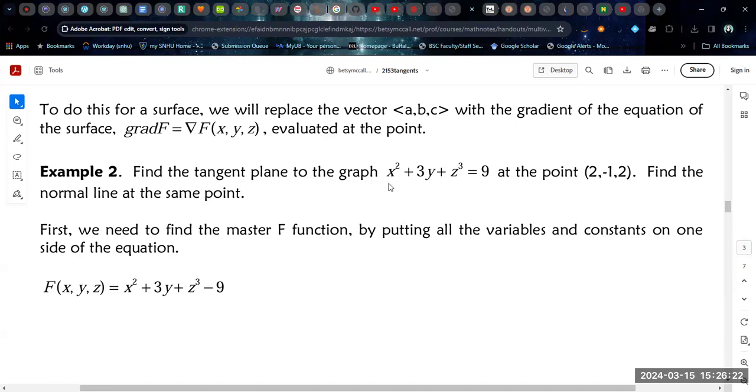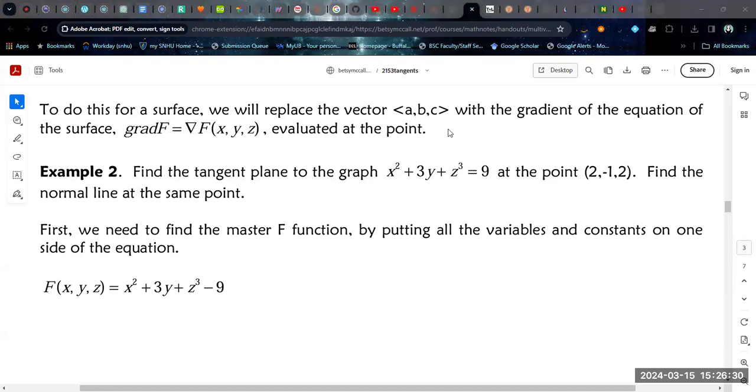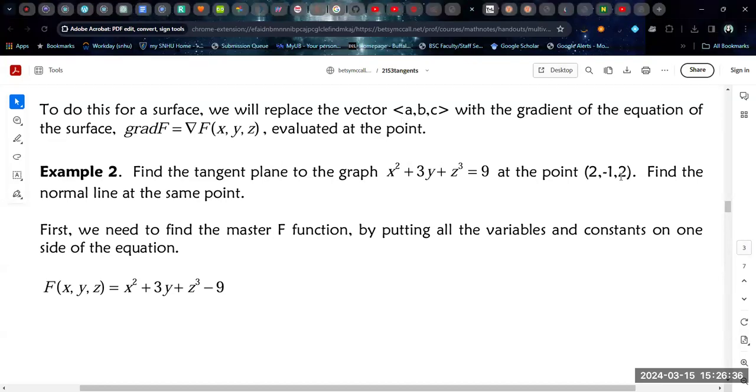So what we're going to do for this particular example, X squared plus 3Y plus Z cubed equals 9. This is some kind of surface in three dimensions that has only three variables. And we're going to evaluate it at the point 2, negative 1, 2. We're going to find the tangent plane to the graph at this point, and then we're going to find the normal line at the same point.